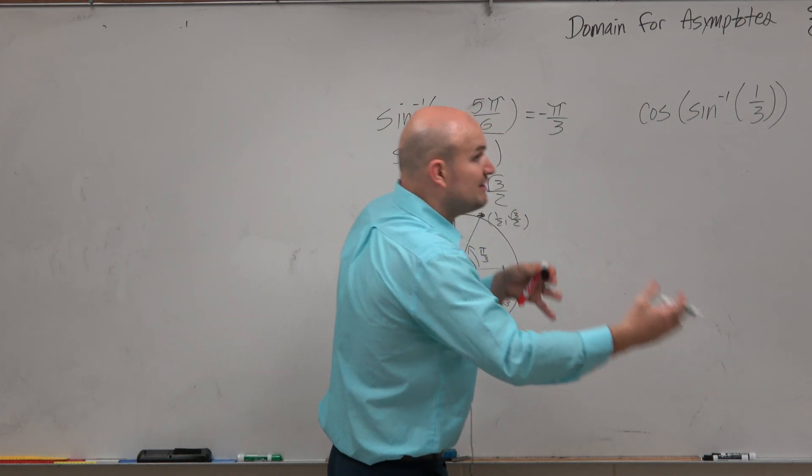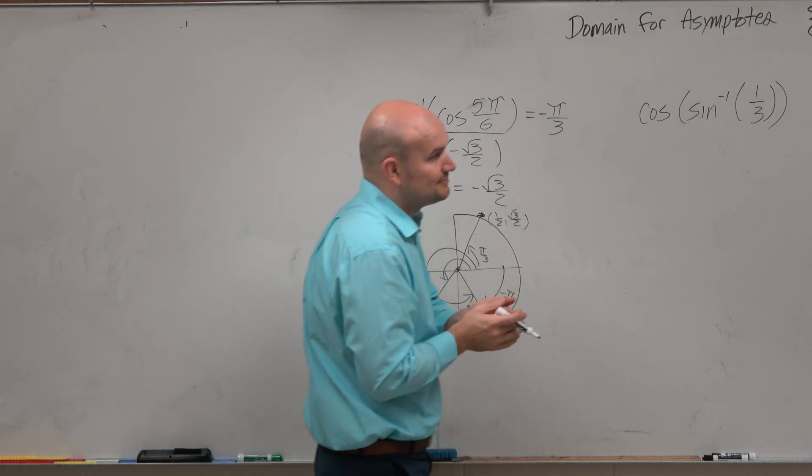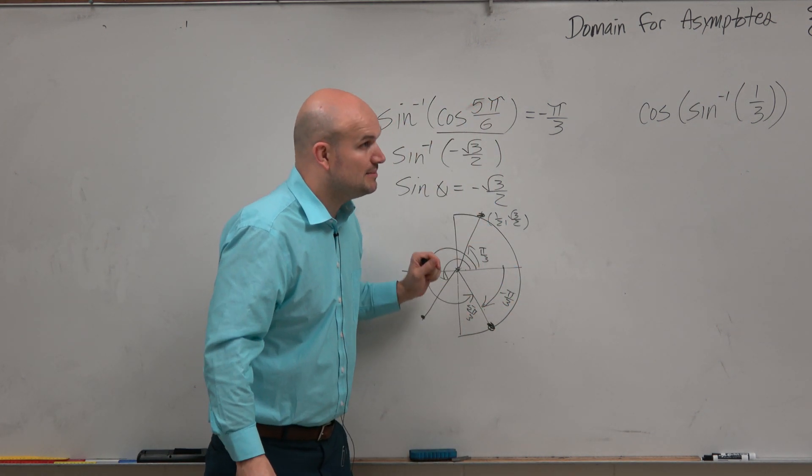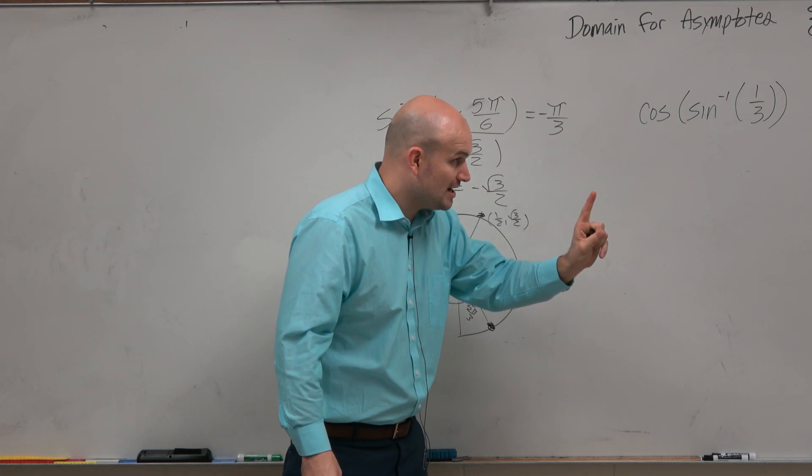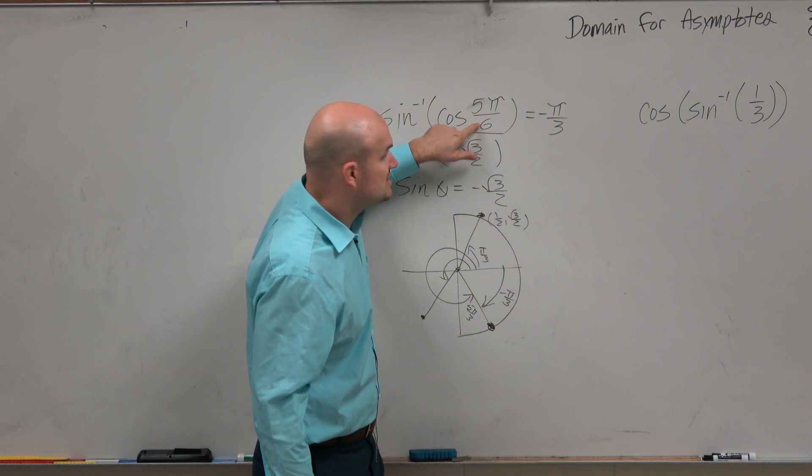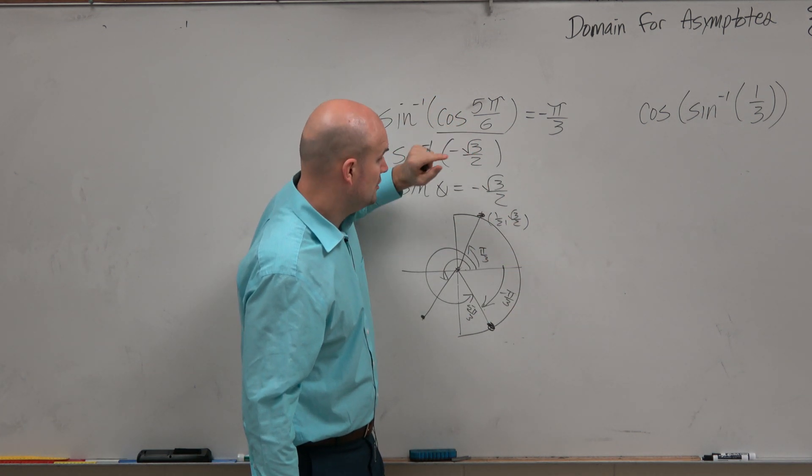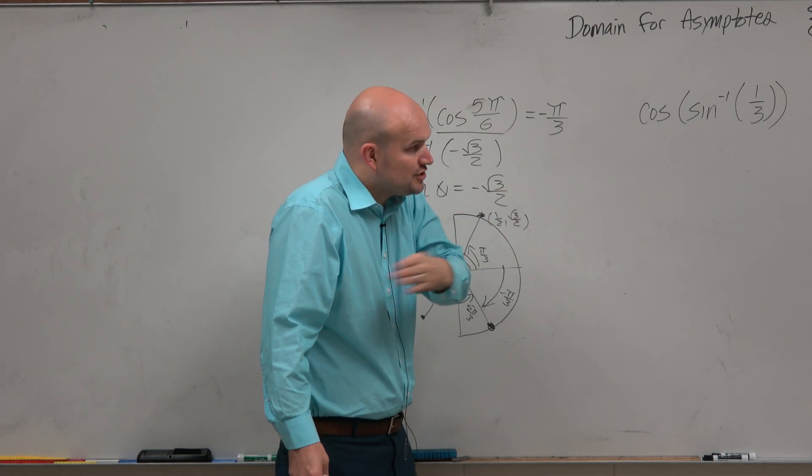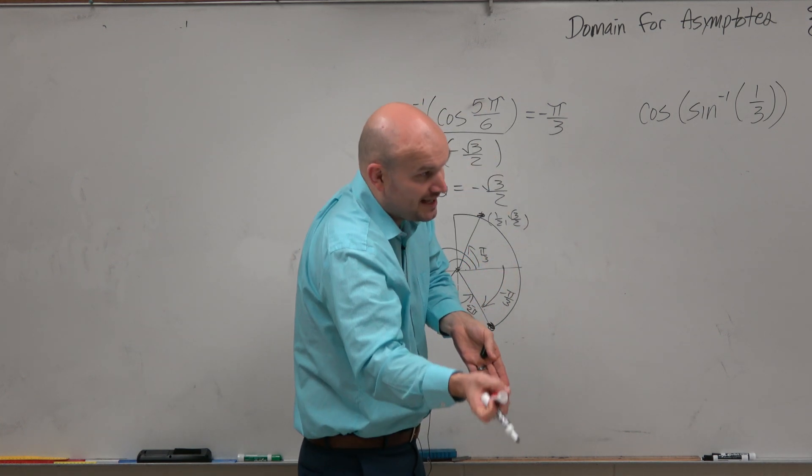So if I work in the reverse, well, let me put it this way. Like if I give you an angle, and I say, what's the point? There's only one point, correct? If I say, what is the point at 5π over 6, or 5π over 6, there's only one point, right? That's the definition of a function. You plug something in, you get something exactly out.